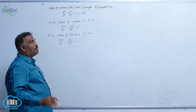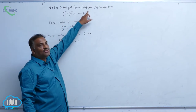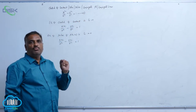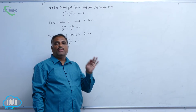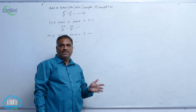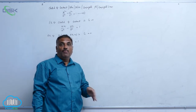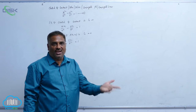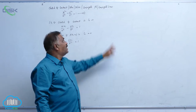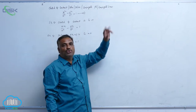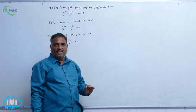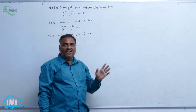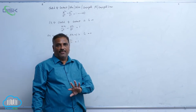Now we will see the conjugate points. We know that two points are said to be conjugate points if the polar of either passes through the other. Two lines are said to be conjugate lines if the pole of either lies on the other.